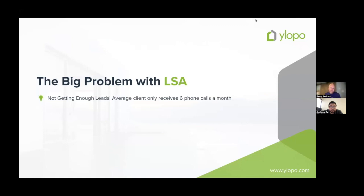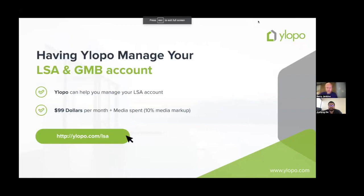One comment I'd say about 20 people made is 'I'm not getting any calls.' I was the first person in Hampton Roads to have LSA, and now there are hundreds and hundreds competing. There are only three agents at the top. Getting those calls is the core problem — if you're getting the calls, you're making a ton of money. I went through three months with no calls, and now I'm getting 15 to 20 a month.